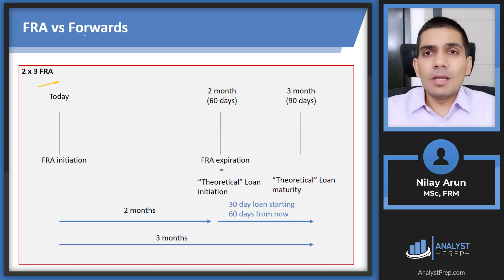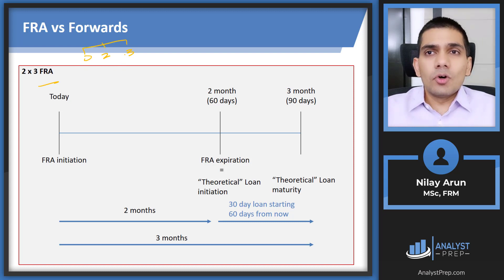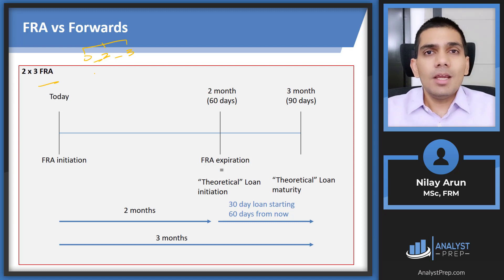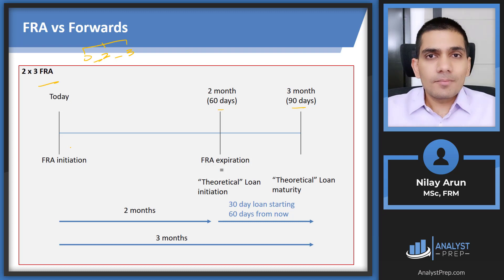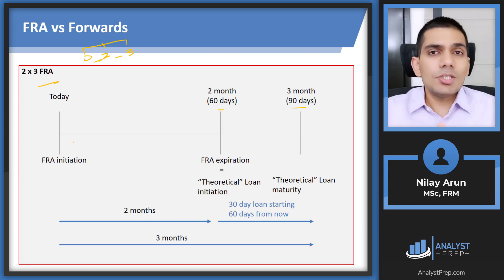A 2×3 FRA: write 2 and 3, add zero — timeline is 0 — 2 — 3. This is a one-month loan starting two months from now. In days: two months is 60 days, three months is 90 days, so the loan period is 90 minus 60 equals 30 days. We have two different dates because we want to lock in the rate for a loan made in the future — borrowing or lending starts 60 days from today.